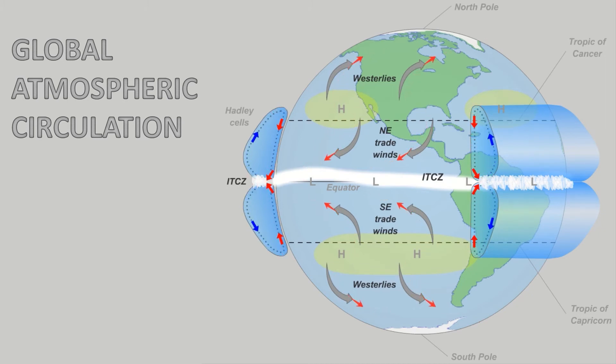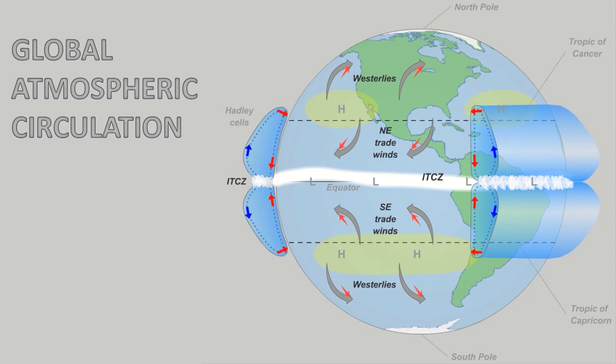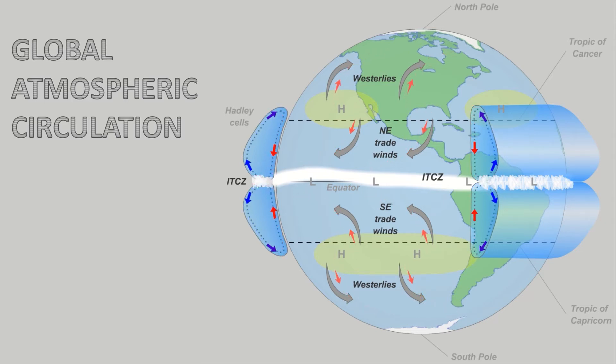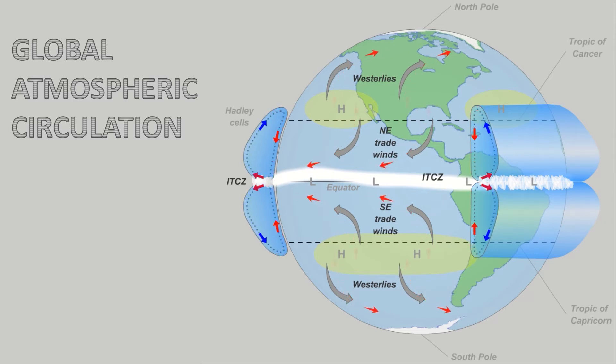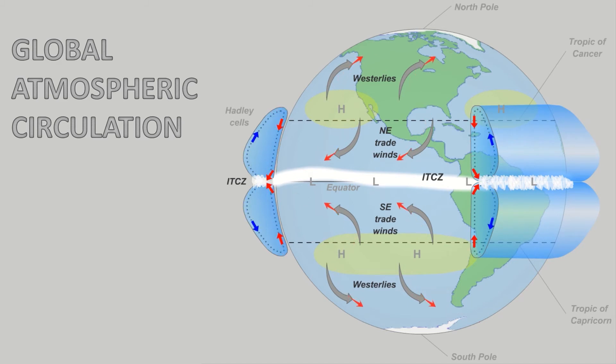This intense low pressure draws wind from the north and south, deflected by the Coriolis effect, creating the strong easterlies known as the Trade Winds.